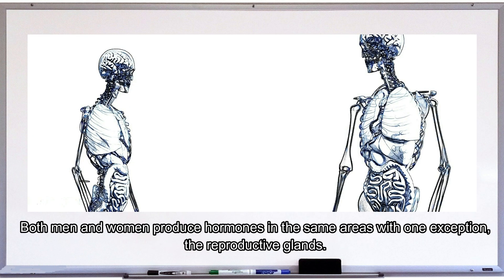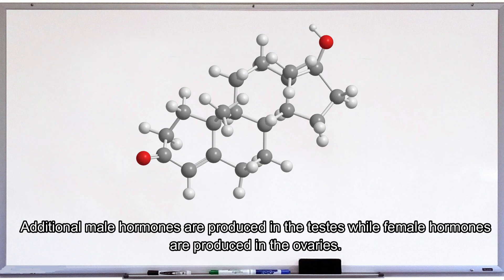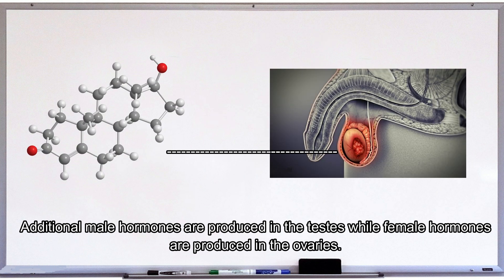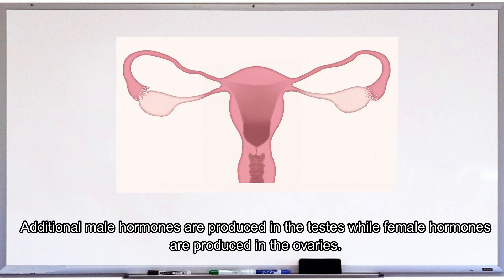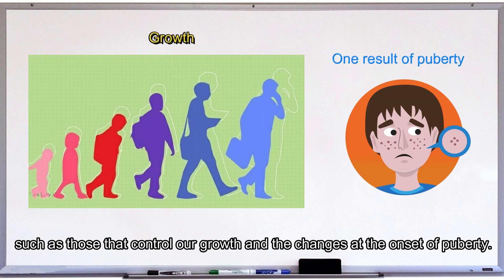Both men and women produce hormones in the same areas with one exception, the reproductive glands. Additional male hormones are produced in the testes, while female hormones are produced in the ovaries. Some hormones have short-term effects, while other hormones have long-term effects such as those that control our growth and the changes at the onset of puberty.